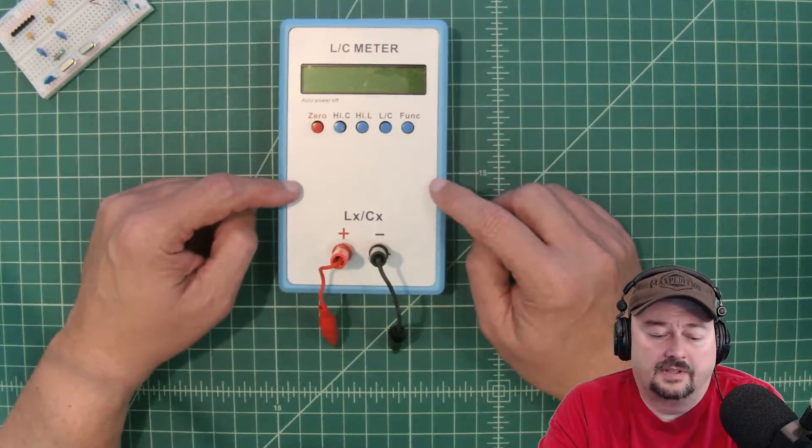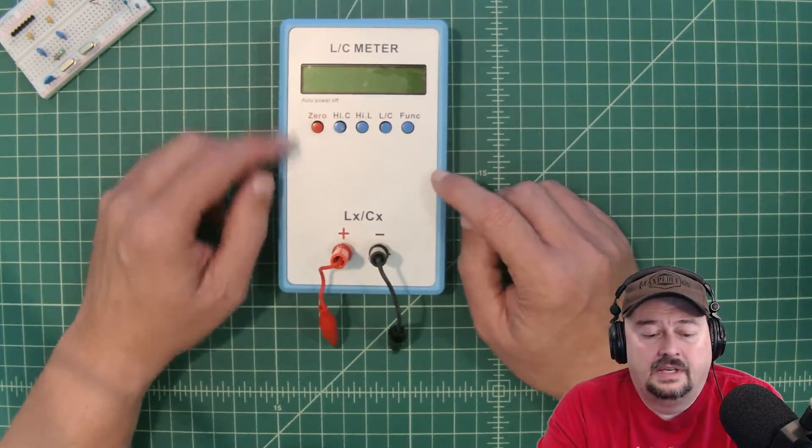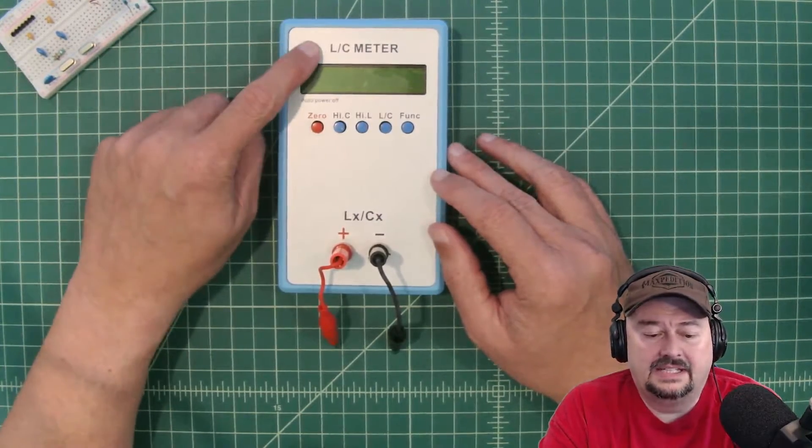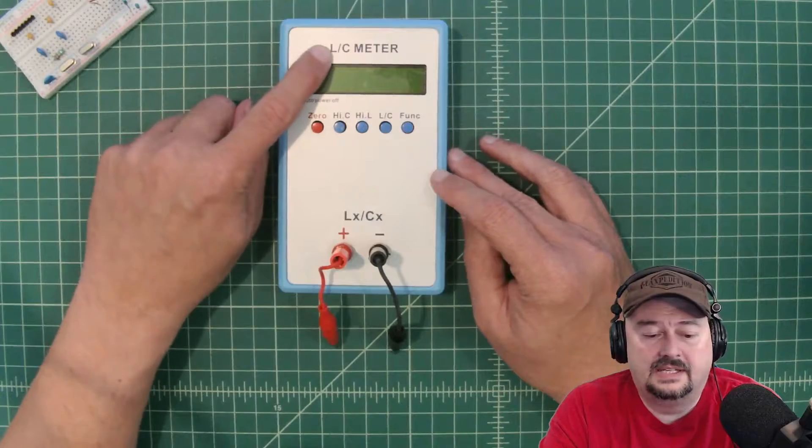All right folks, in today's video we're going to talk a little bit about this LC meter. One of the things I wanted to cover right out of the gate to clear up any confusion is L is for inductance, C is for capacitance.